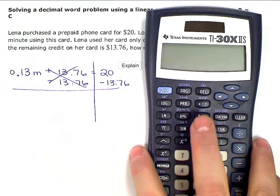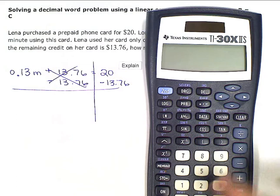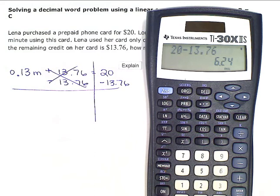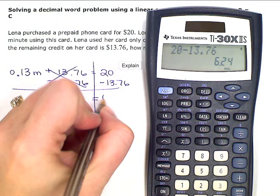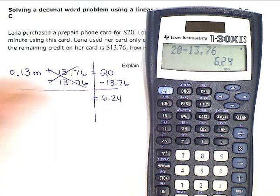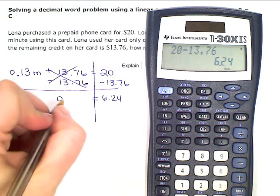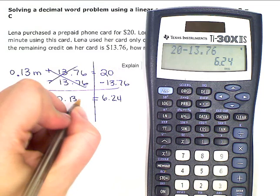So if I do $20 minus $13.76, that leaves me with 6.24 on the right. On the left, I just have the 0.13M left.